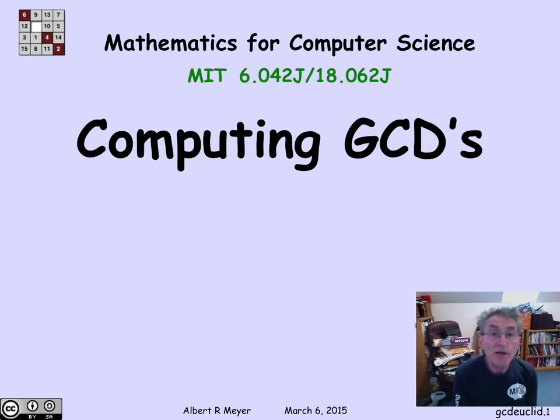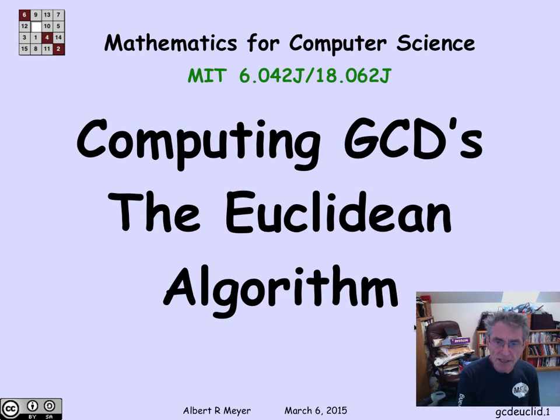The greatest common divisor of two numbers is easy to compute, and that's a fact that will play a crucial role in the number theory that we're going to develop and the properties of some of the modern codes that are based on number theory. The efficient way to compute the GCD of two numbers is based on a classical algorithm known as the Euclidean algorithm, which is several thousand years old.